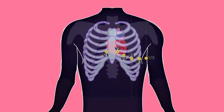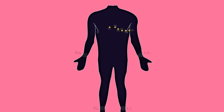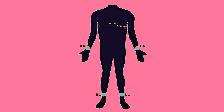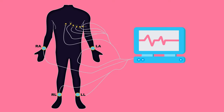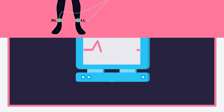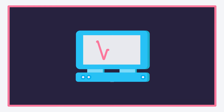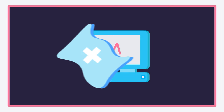Ensure limb electrodes are symmetrically placed. Connect the leads to the electrodes. Calibrate the ECG machine and obtain the ECG trace. Remove the electrodes and gel, clean the equipment, dispose of the electrodes, and document.